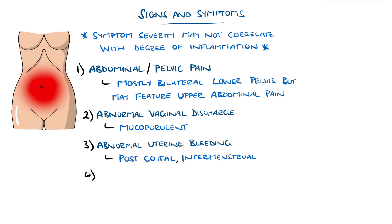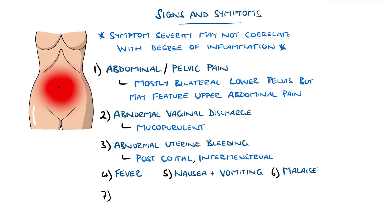Fever is another common feature. Other features include nausea, vomiting, and malaise. Dyspareunia — meaning pain on intercourse — is also a common finding.